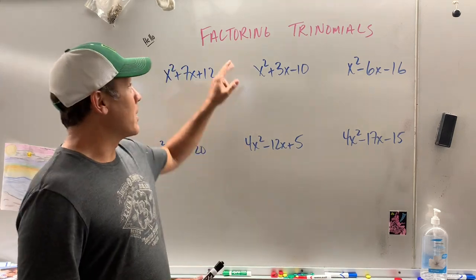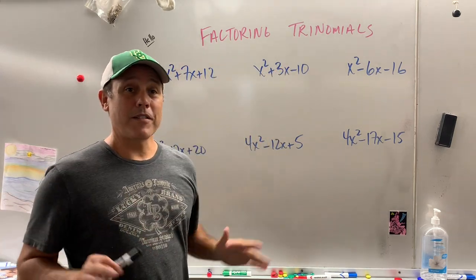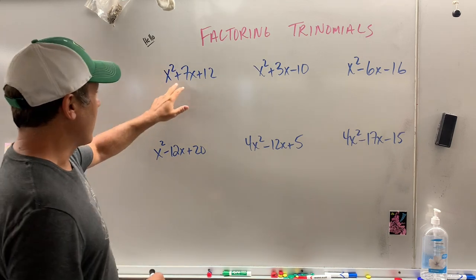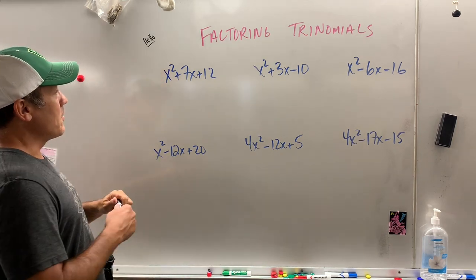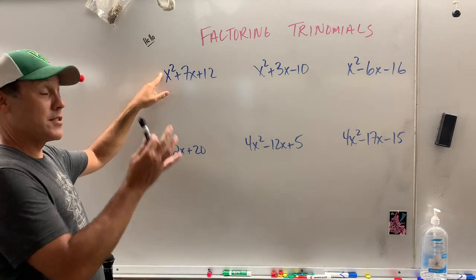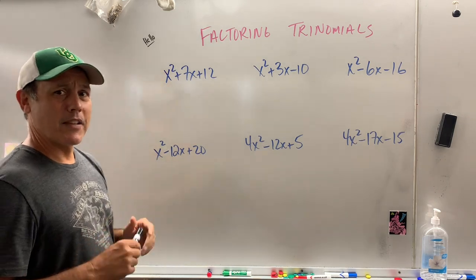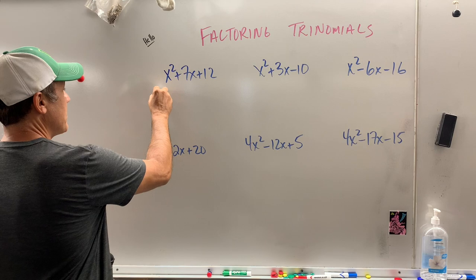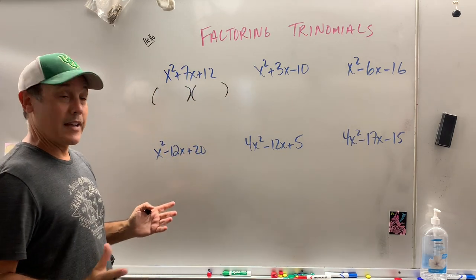Alright, welcome back. We're going to factor our trinomial. It's a very important lesson right here. First thing you got to do is when there's no coefficient or number to the left of the x-squared, that's making life a lot easier. So the first step is parentheses, parentheses. Anybody can do that.